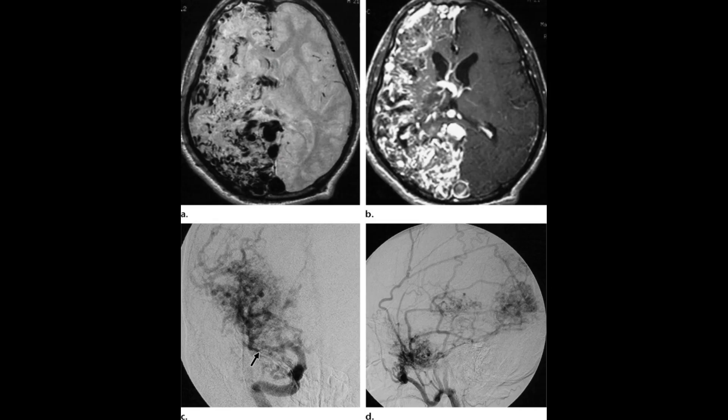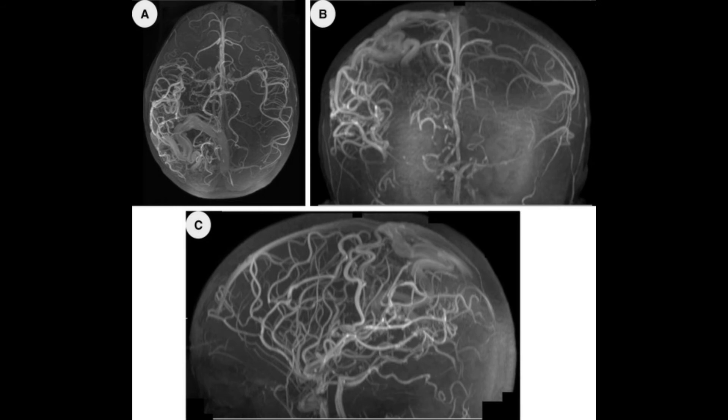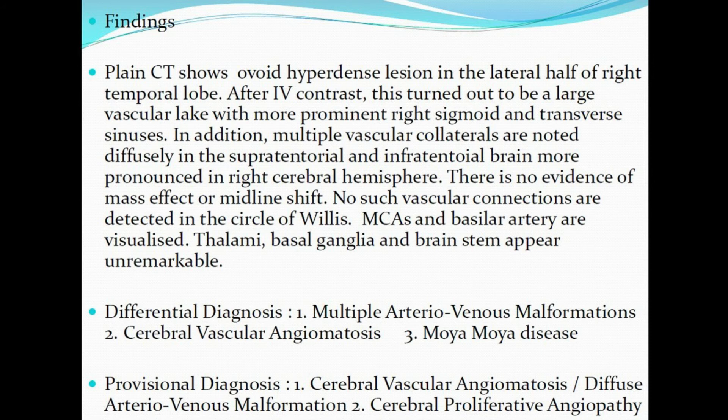The patient underwent MRI brain and DSA, and the findings remained the same as already described. No therapeutic intervention was done at that time. After discussing with the neurologist and the interventionist, we came to the conclusion of a final diagnosis of either cerebral proliferative angiopathy, cerebral vascular angiomatosis, or diffuse AVM.